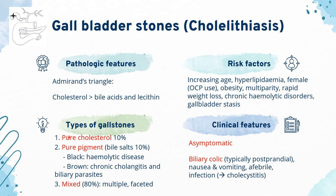There are different types of gallstones: pure cholesterol, pure pigment, and mixed. Pure pigment stones are further divided into black stones, which are hard and brittle, found in haemolytic diseases, and brown stones, which are soft and fragile, due to chronic cholangitis and biliary parasites. Risk factors for gallstone formation include increasing age, hyperlipidaemia, female sex with OCP use, obesity, multiparity, rapid weight loss, chronic haemolytic disorders, and gallbladder stasis.